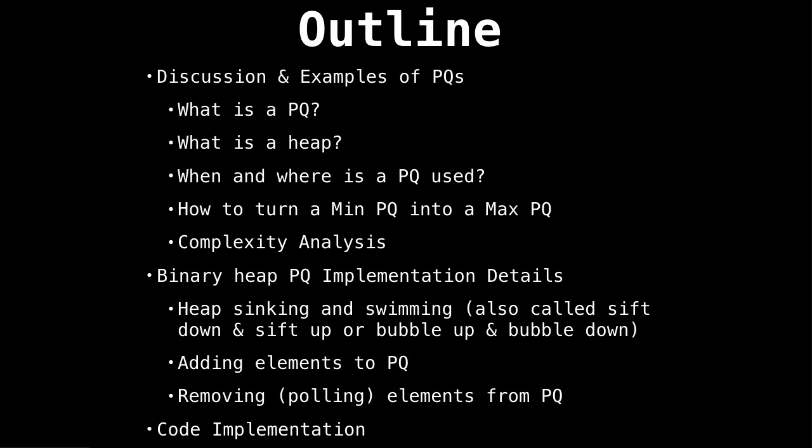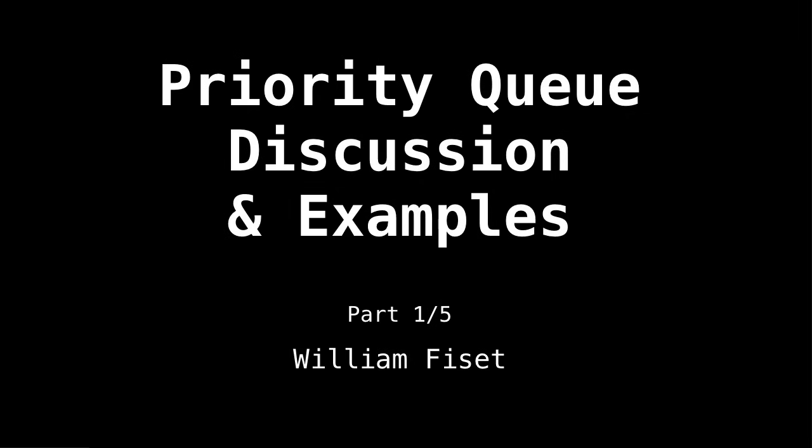Next, we're going to go into some great detail about how to implement a priority queue using a binary heap. There we'll look at methods of sinking and swimming nodes up and down our heap. These terms are used to shuffle around elements in a binary heap. As part of the implementation explanation, I also go over how to pull and add elements. So there's a lot to cover, so let's get started. Discussion and examples. This is going to be part one of five in the priority queue series.